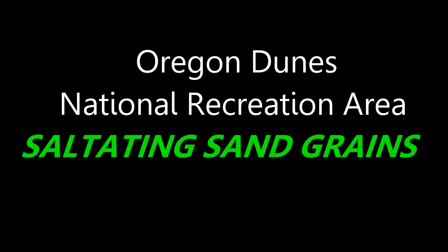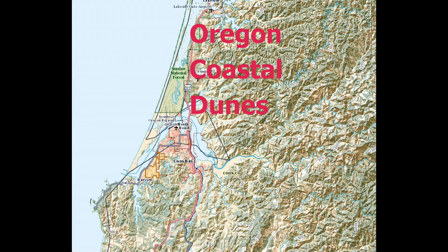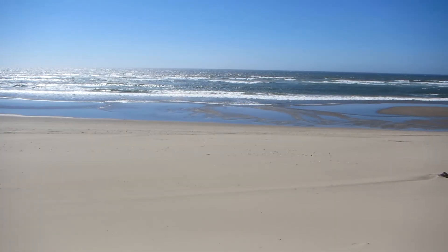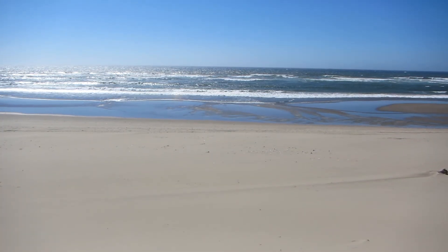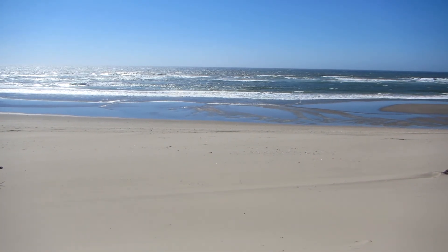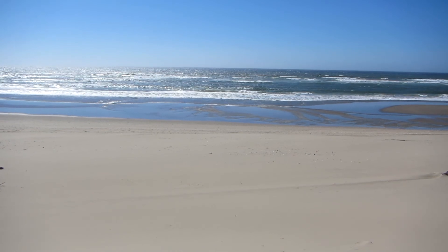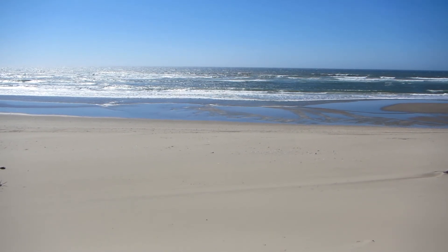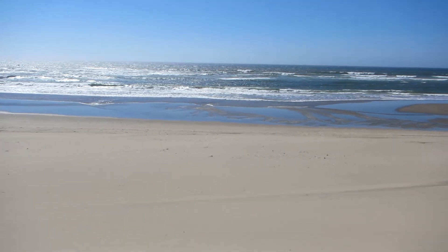Along the Pacific coast of Oregon are extensive dunes created by winds blowing inland. Beach sands are picked up by the wind, and in a saltating motion, they move slowly along. These are the largest expanse of coastal sand dunes in North America.